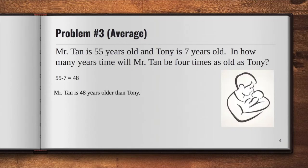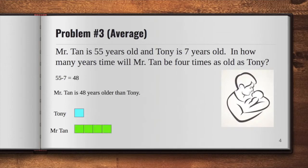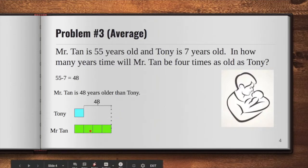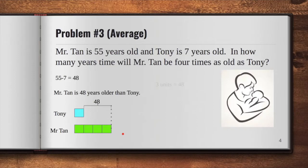So Mr. Tan is 48 years older than Tony. Now, let's draw the model to represent Tony's age since he is younger. So we draw one unit for Tony. What about for Mr. Tan? We can use this clue. So for Mr. Tan's age after several years, it has four units. Now, remember, earlier we got the age gap of Mr. Tan and Tony, and we can reflect this in our model like this. By looking at our model, we can see that 48 years has three units, so we can work out on this clue first to solve the problem.